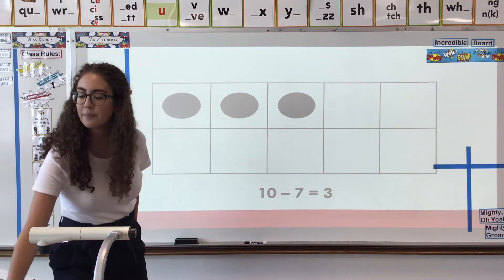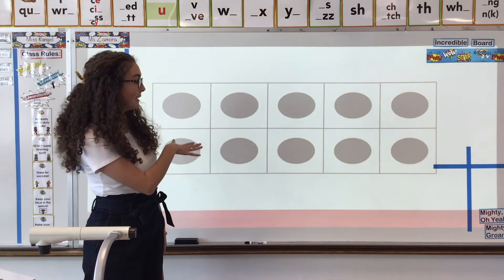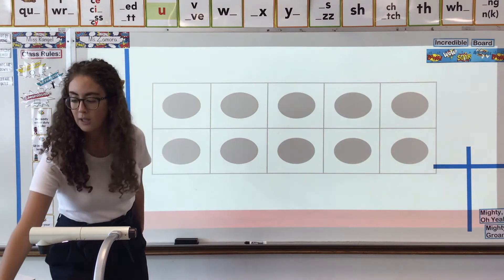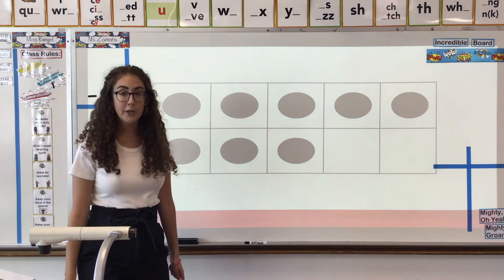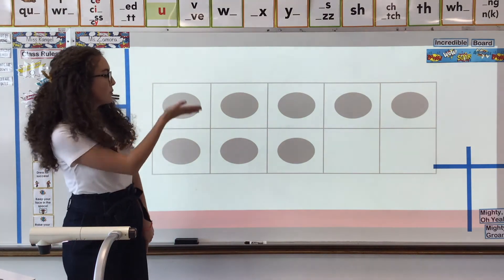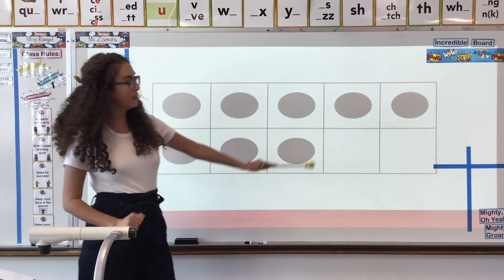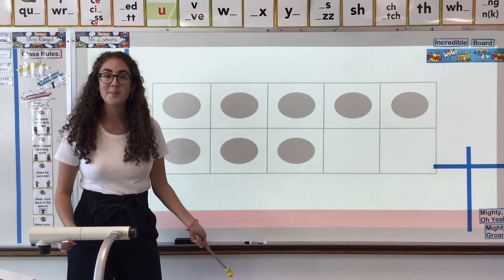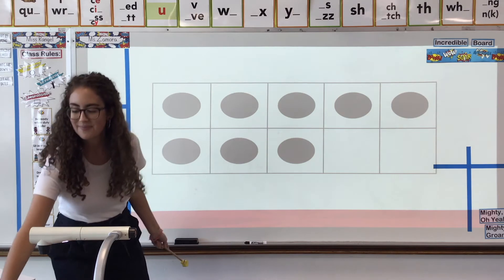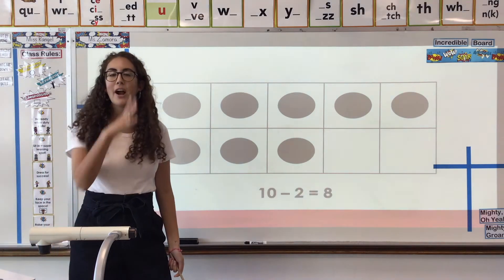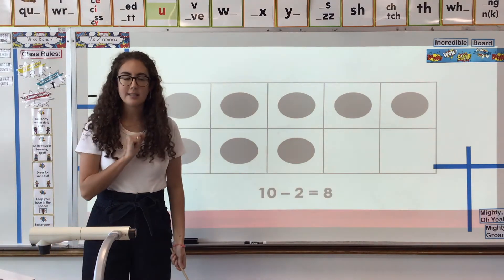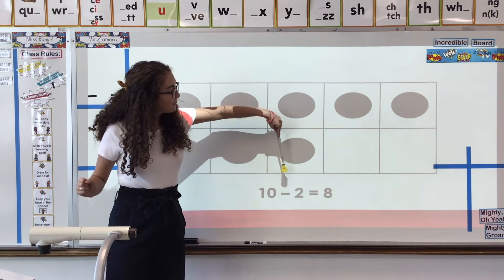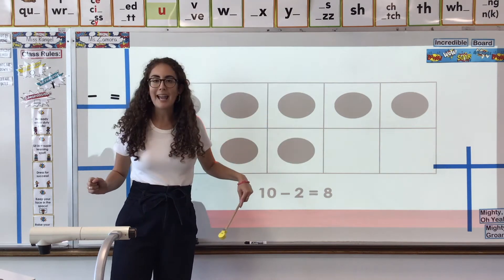Last one, let's go. 10 minus 8 — there are 8 dots left, but we took away 8, so read it with me: 10 minus 2 equals 8. Good job.